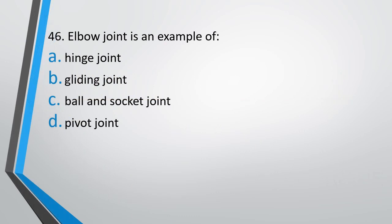Question No. 46. Elbow joint is an example of: hinge joint, gliding joint, ball and socket joint, or pivot joint. The correct answer is option A, hinge joint.